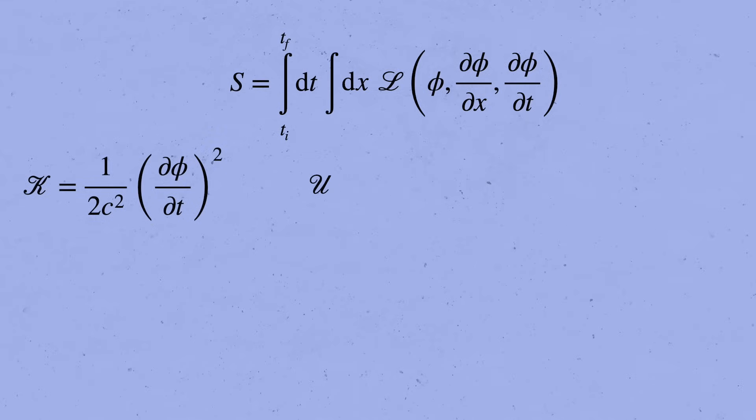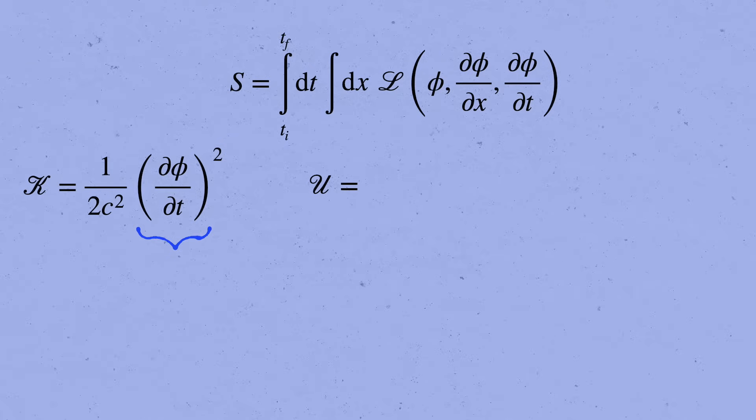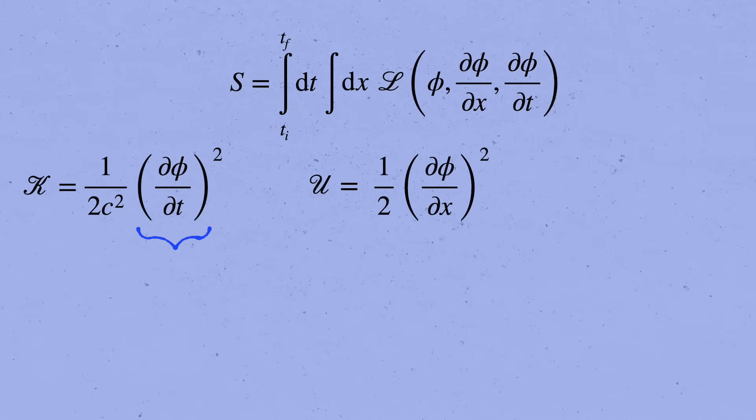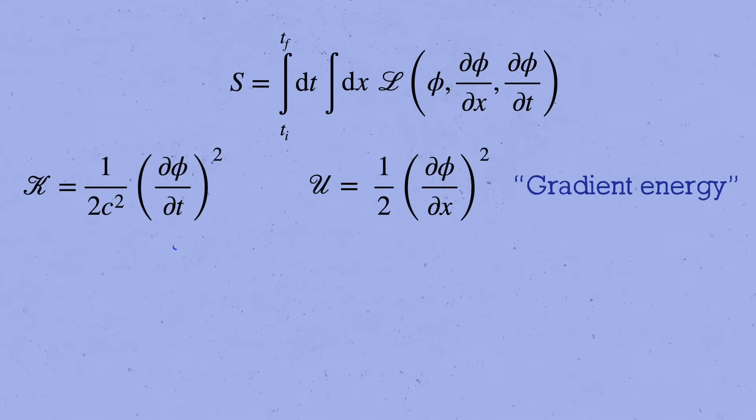Next, what should we choose for the potential energy density? Again, similar to a particle where we can pick any potential u of x and it determines the kind of system that we're studying, our choice for curly U will depend on the theory that we want to construct. But there is one contribution that we always want to appear. In relativity, time and space are supposed to enter on equal footing. And so since we have a term that goes like d phi by dt squared, there should also be a term that goes like d phi by dx squared. This is sometimes called the gradient energy. It's a very reasonable potential to include. It means that a field configuration with lots of wiggles and space will have a larger energy.